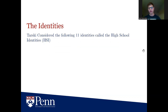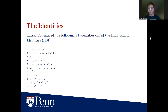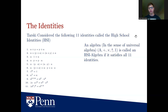Tarski considered specifically the following 11 identities that he called the high school identities, which we'll call HSI from now on. These include the identities of addition: associativity, commutativity, multiplicative identity 1, associativity and commutativity of multiplication, distributivity, and all the standard exponent laws. We call a structure A with operations plus, times, and exponentiation — denoted by an upper N1 — a HSI algebra if it satisfies all 11 identities.